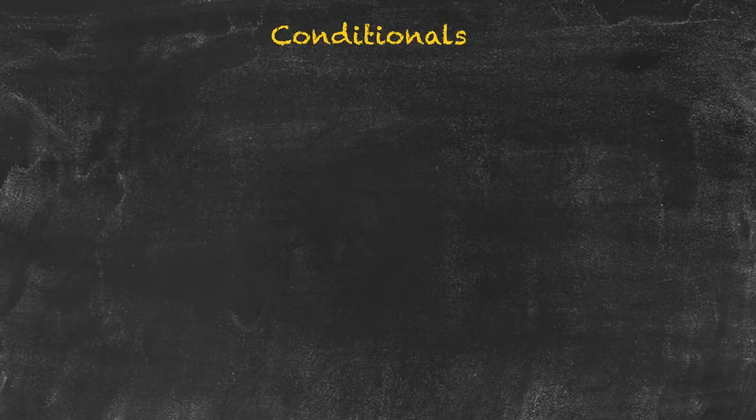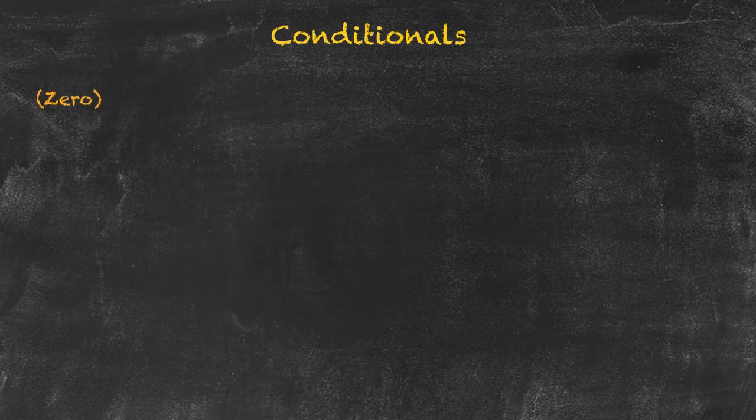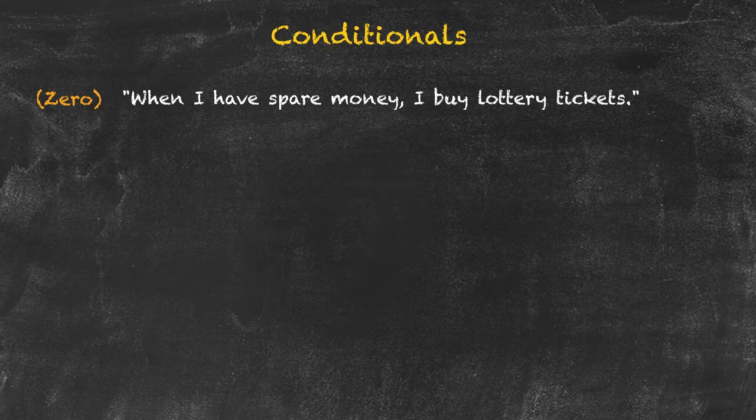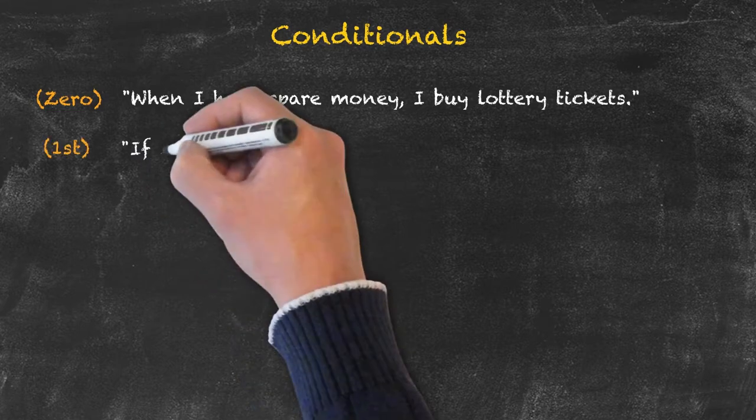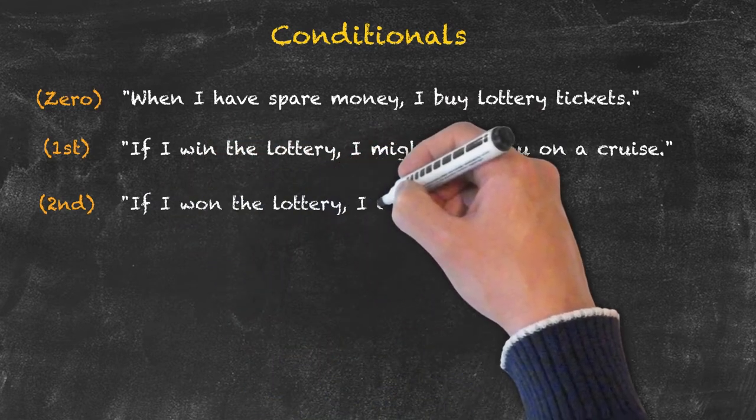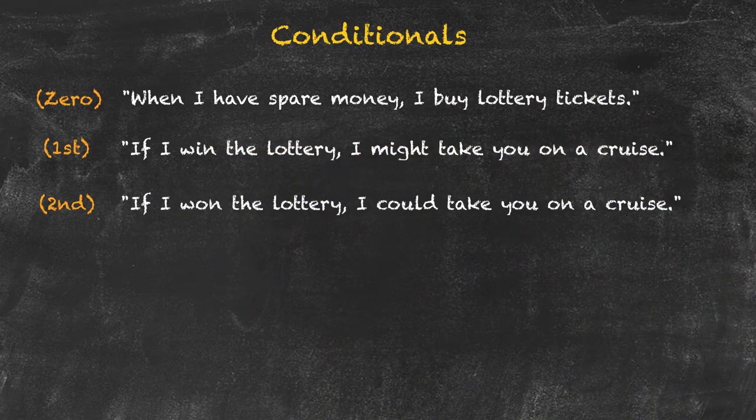So finally, let's have a look at one situation and change the sentence structure depending on what we are trying to say. The zero: 'When I have spare money, I buy lottery tickets.' That's what's generally true, that's what usually happens. 'If I win the lottery, I might take you on a cruise.'